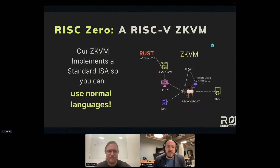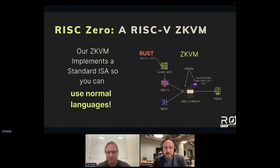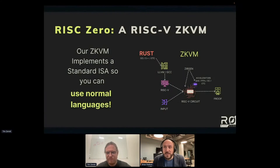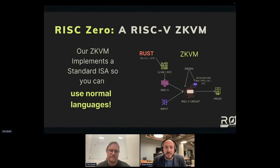RISC Zero's zkVM implements RISC-V. RISC-V is a microarchitecture — it's an open source and standard microarchitecture, as opposed to say ARM or x86 which are proprietary microarchitectures. There are other examples of open microarchitectures like MIPS, or semi-open ones, and also quasi microarchitectures like Wasm. Here at RISC Zero, we implemented a circuit that represents a RISC-V microprocessor.